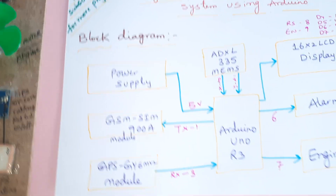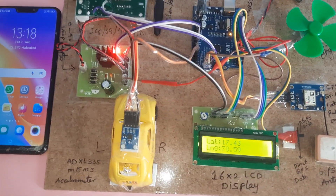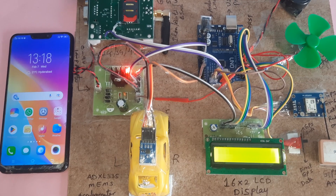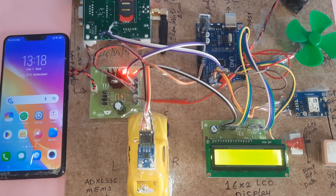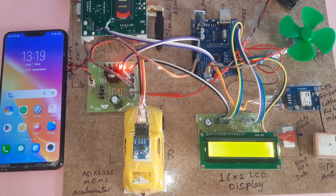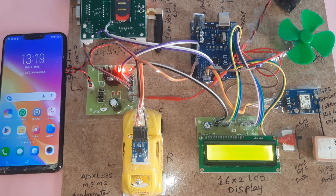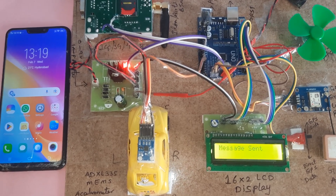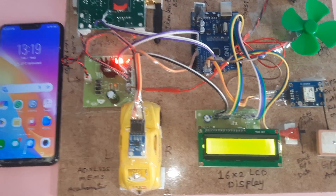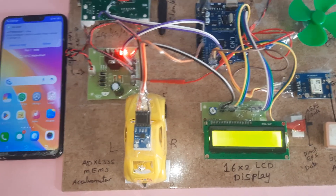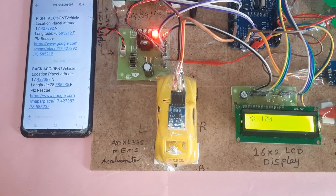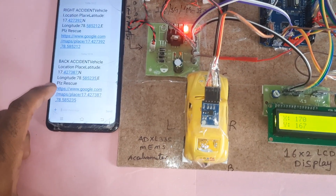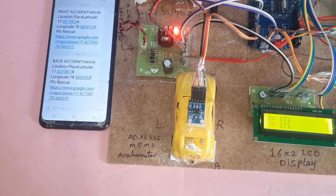This is our block diagram. It shows the attitude value and longitude value. The SMS is sent via GSM SIM with the accident type, latitude, and longitude location. Thank you.